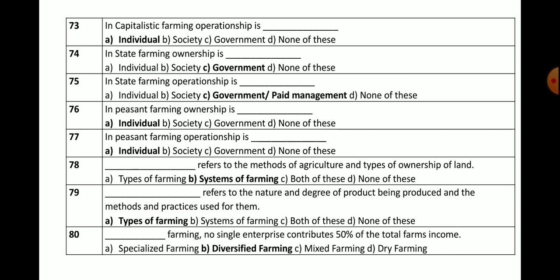Question number 80: In which type of farming does no single enterprise contribute 50% of the total farm income? Options: specialized, diversified, mixed, or dry farming. The correct answer is diversified farming — in diversified farming, no single enterprise can contribute up to 50% of the total farm income.